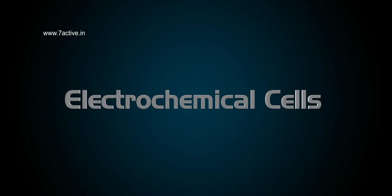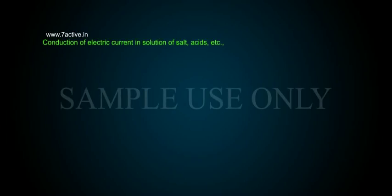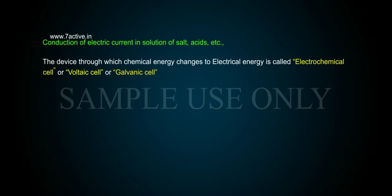Electrochemical Cells. Conduction of electric current in solution of salt, acids, etc. The device through which chemical energy changes to electrical energy is called an electrochemical cell, or voltaic cell, or galvanic cell.